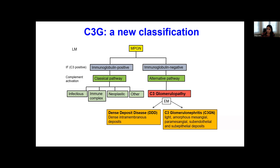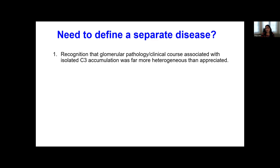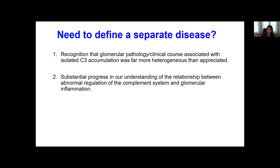The question is: what was the need to separate out C3G and have a whole separate disease by itself? Several things went into this. First, as we recognized that the glomerular pathology and clinical course of patients with isolated or predominant C3 accumulation were different from others with immune complexes and C3, and that these patients had a much more heterogeneous presentation. Second, as the understanding of the complement system has taken off in recent years, we've recognized that this set of diseases is due to complement dysregulation in the alternative pathway specifically.